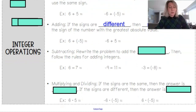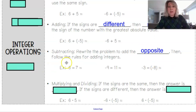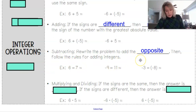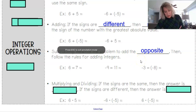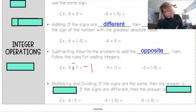With subtraction problems with integers, remember keep-change-change, which is adding of the opposite. We rewrite the problem to add the opposite, then follow the rules for adding integers. So 6 minus 7 becomes 6 plus negative 7. And negative 9 take away 11 is like adding negative 11.